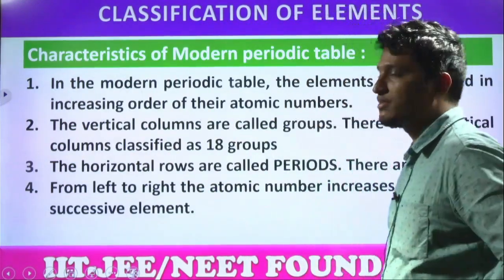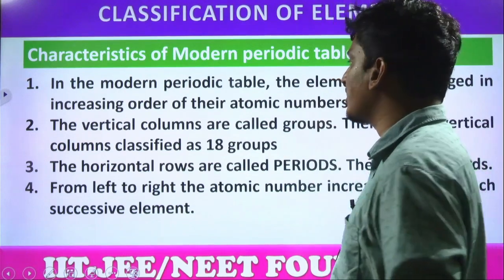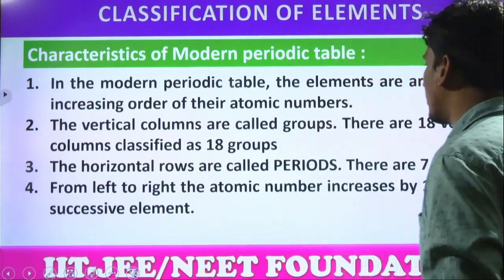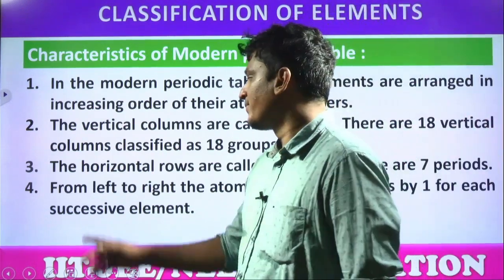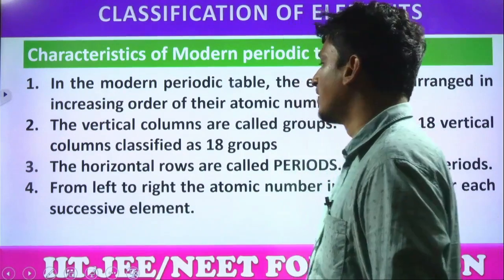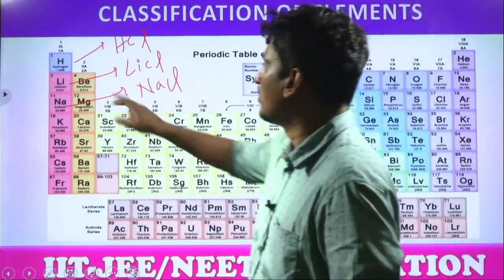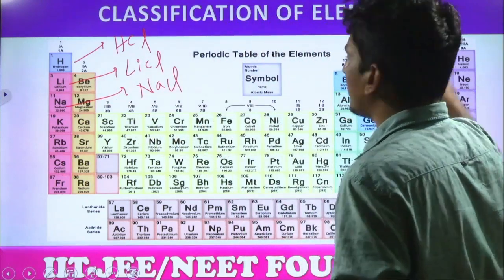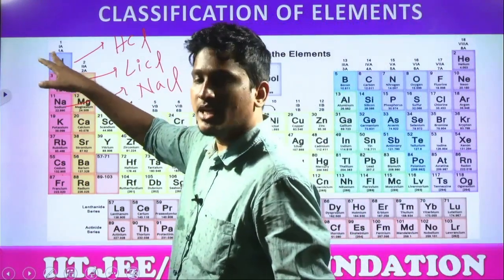In the modern periodic table, the elements are arranged in the increasing order of their atomic numbers. The vertical columns are called groups — there are 18 vertical columns. The horizontal rows are called periods — there are 7 periods. From left to right, atomic numbers increase by 1: first element, second element, third, fourth, fifth, sixth, seventh, and so on.